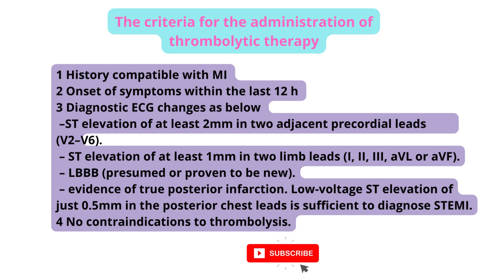3. Diagnostic ECG changes as below: ST elevation of at least 2 mm in 2 adjacent precordial leads V2–V6; ST elevation of at least 1 mm in 2 limb leads I, II, III, AVL or AVF; LBBB presumed or proven to be new; evidence of true posterior infarction — low-voltage ST elevation of just 0.5 mm in the posterior chest leads is sufficient to diagnose STEMI.